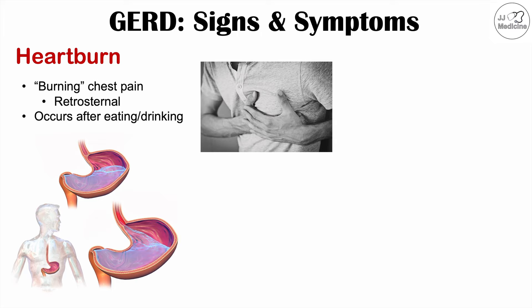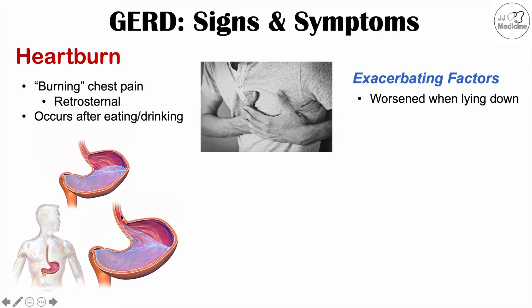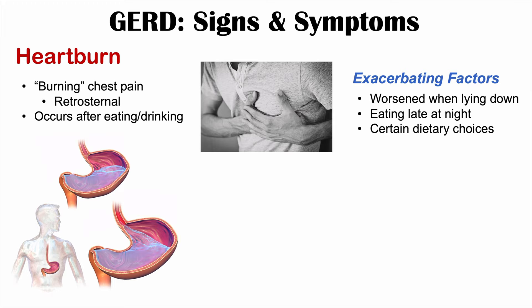Some exacerbating factors — things that make heartburn worse — include lying down, because if the lower esophageal sphincter is open, acid can pull back into your esophagus. Eating late at night worsens symptoms for similar reasons. Certain dietary choices such as chocolate, caffeine, and alcohol can worsen symptoms. Eating too quickly is also an exacerbating factor.